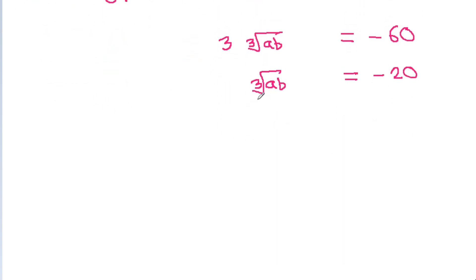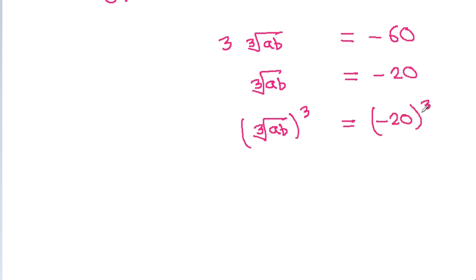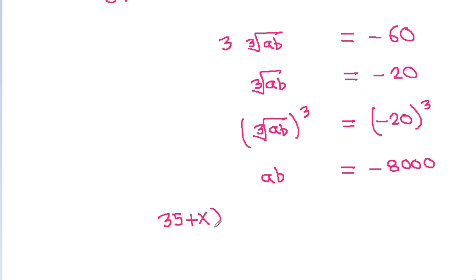And if we cube both sides, then (cube root of ab)³ equals (−20)³. So ab equals minus 8000.